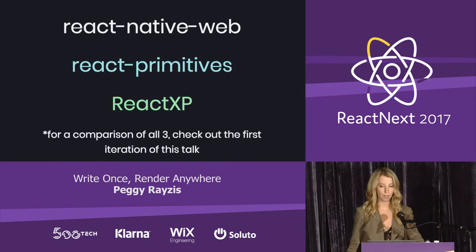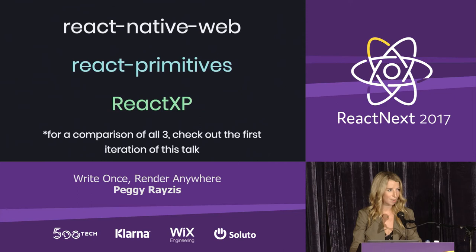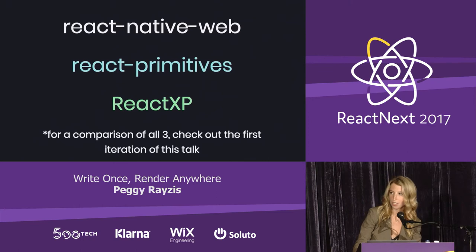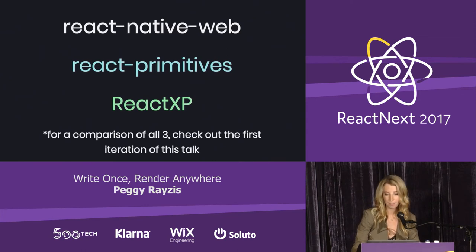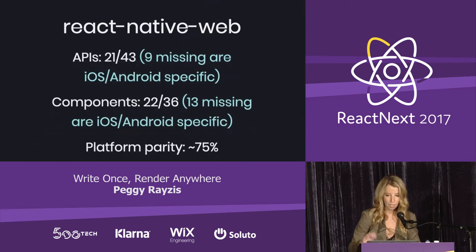Three libraries have emerged to cover these needs, and all of them are excellent. The first is React Native Web, developed by Nicholas Gallagher at Twitter — it's been battle-tested in production with Twitter Lite, their new progressive web app. Second, we have React Primitives, developed by Leland Richardson at Airbnb. He gave a really excellent talk on it at Chain React that you should check out. You also have React XP, developed by Microsoft — it's the newest of the three and it's used by the Skype team in production. Today we're going to focus on React Native Web in order to build our universal components, as it has the highest platform parity of all the libraries.